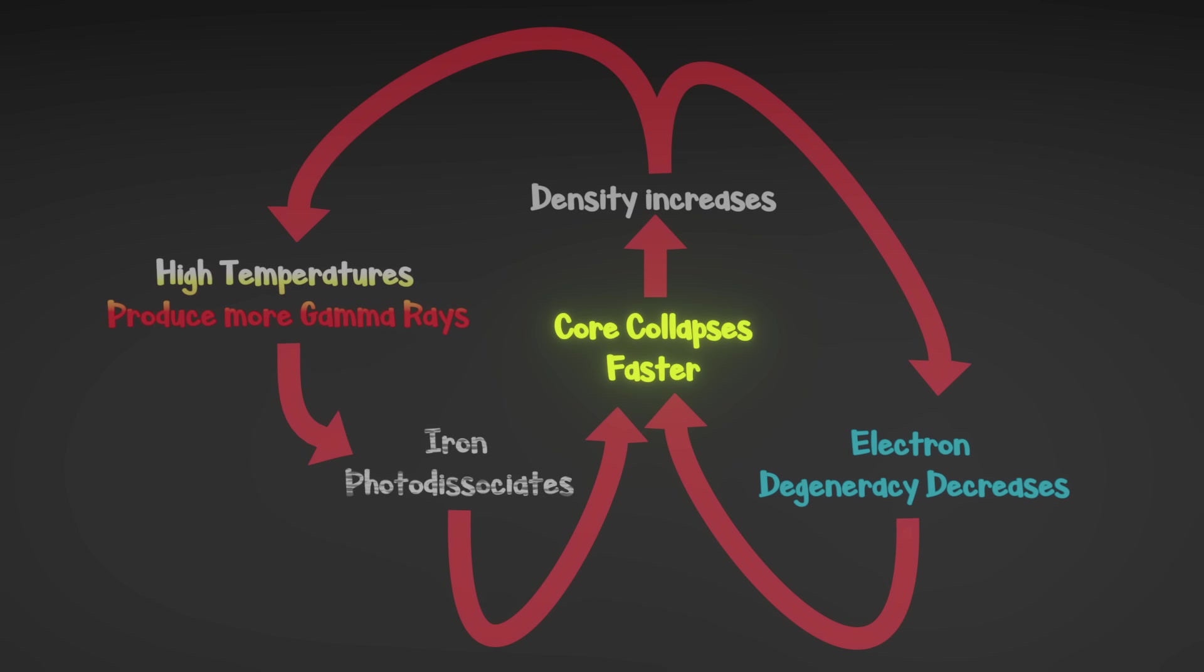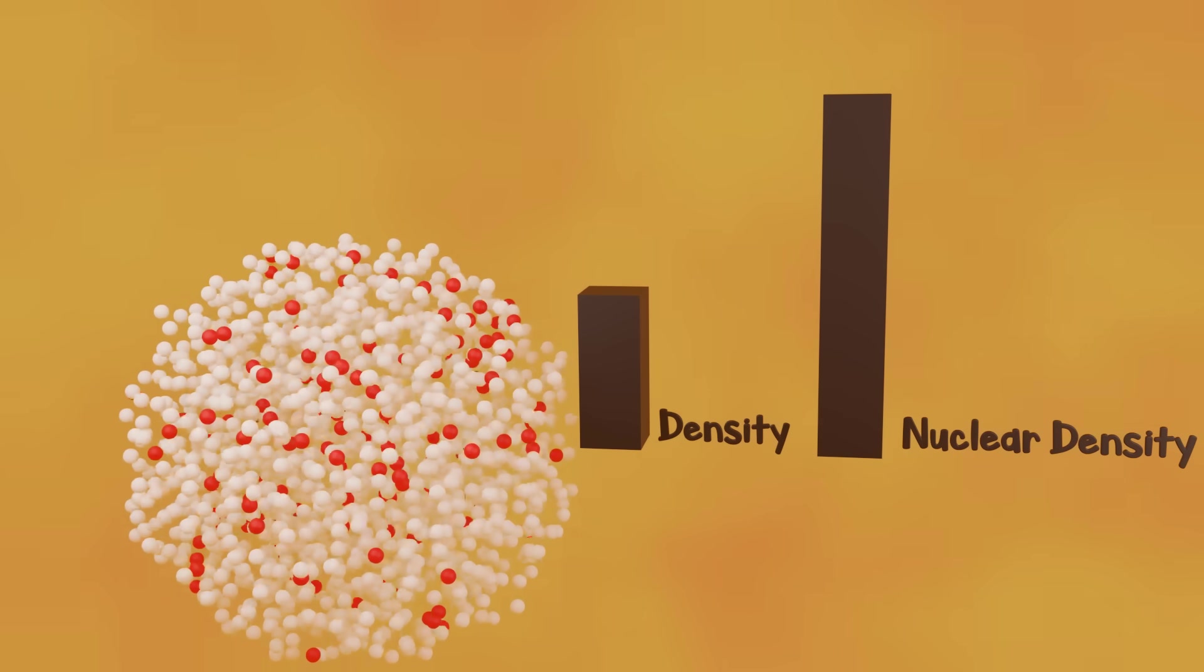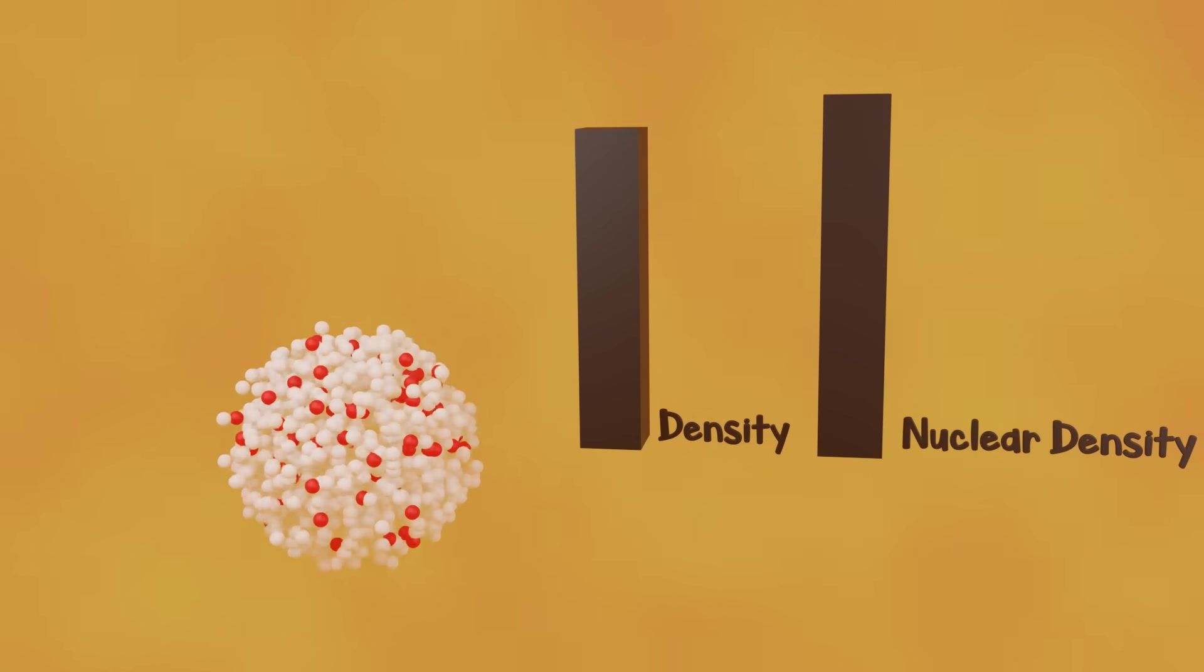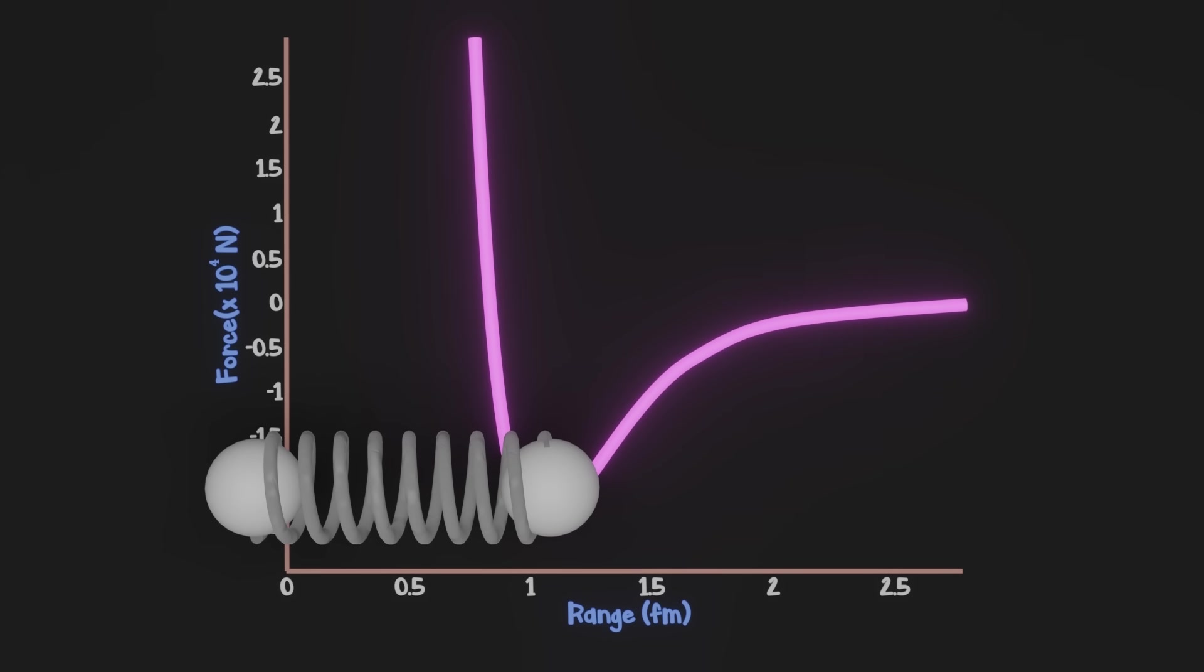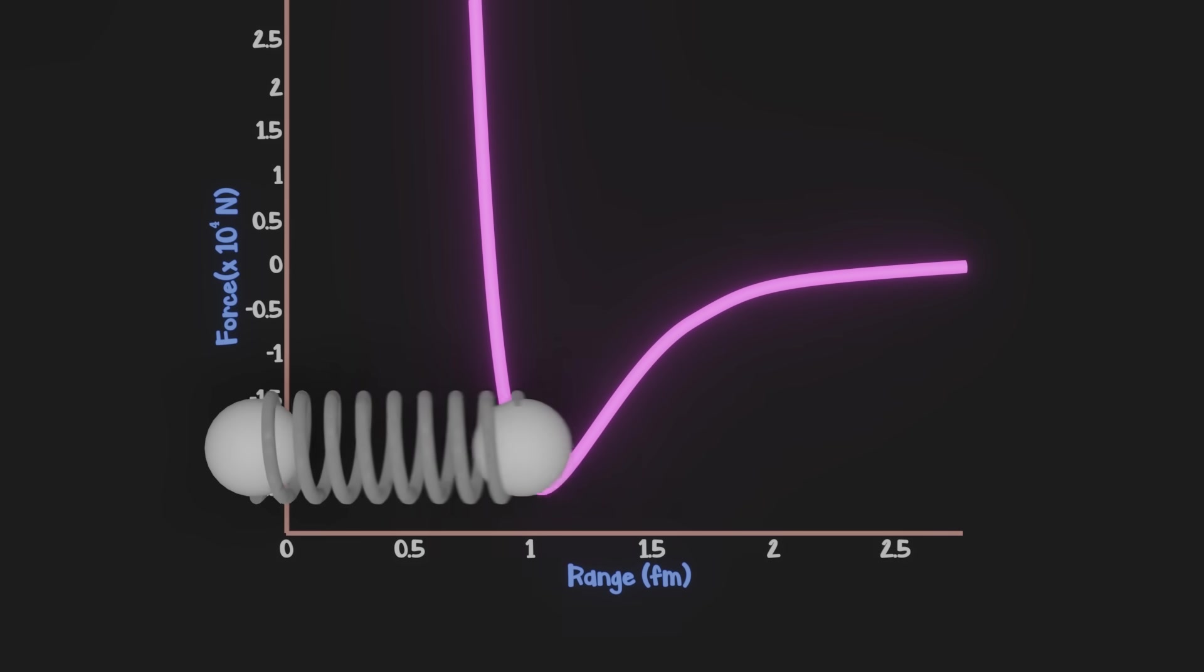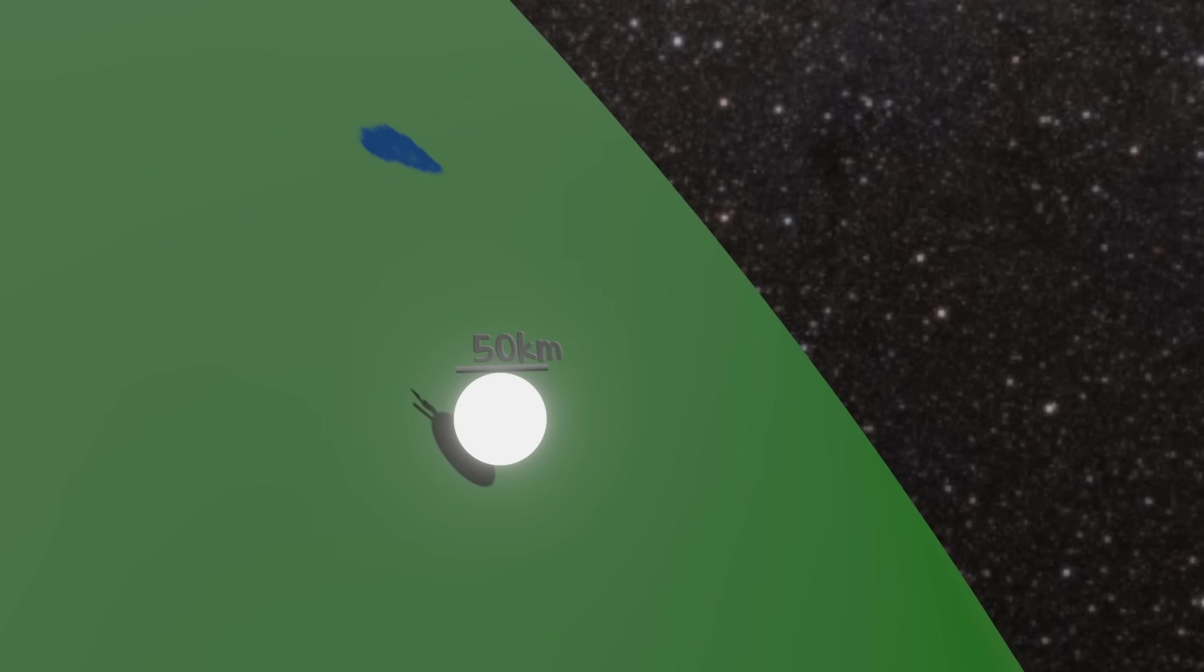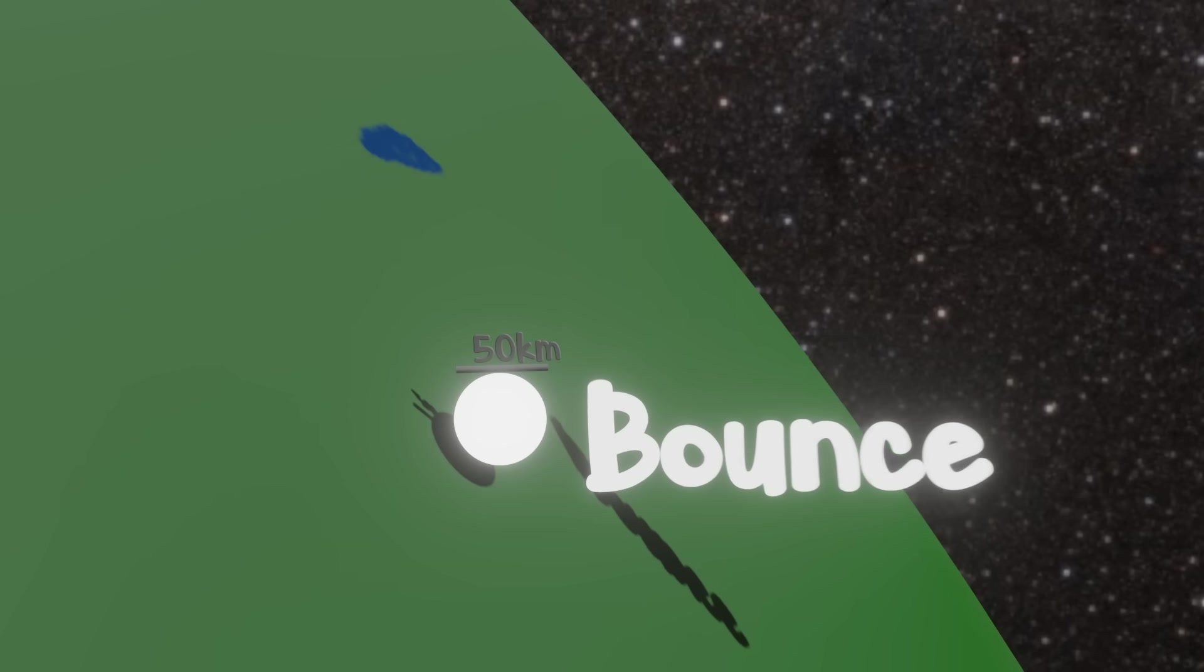This feedback loop serves to generate the hottest object in the universe. As it collapses, the momentum of the shrinking core actually causes its density to overshoot the average density inside of a nucleus. The strong force acts like a spring. If you're too close, it pushes you away. If you get too far, it pulls you back. In this case, our neutrons are too close and the strong force pushes them back.